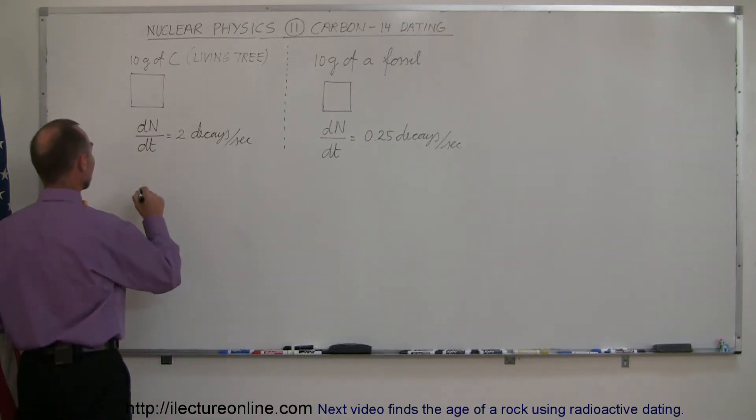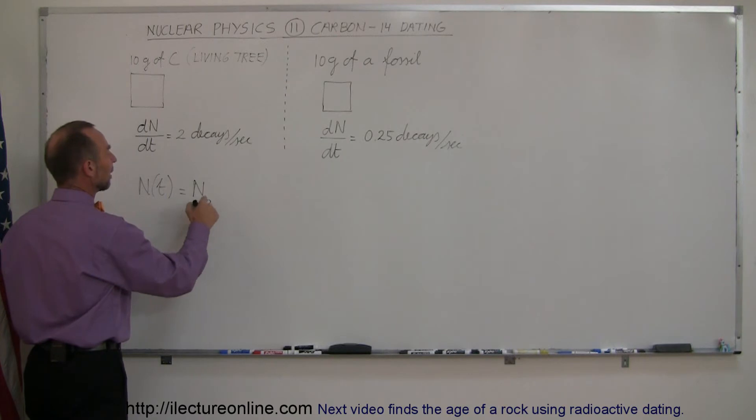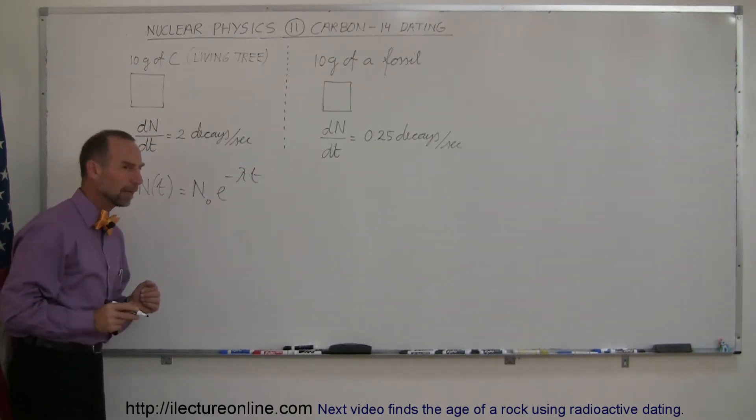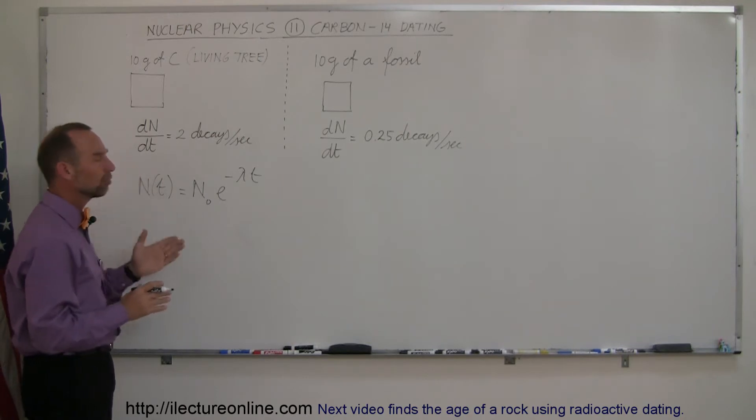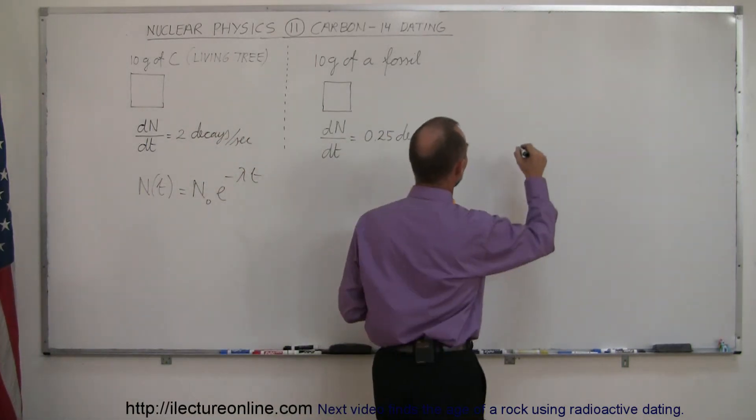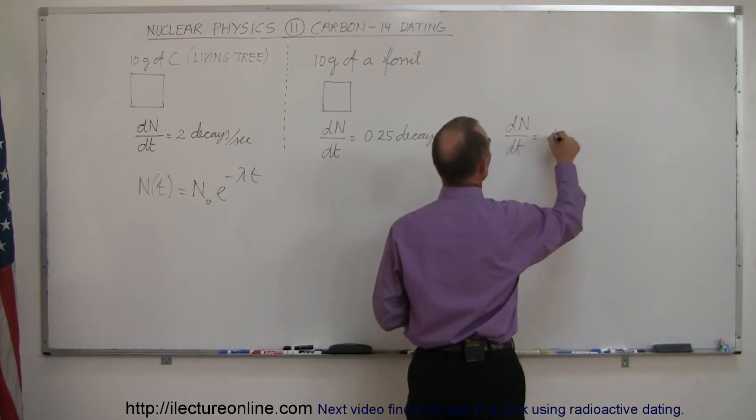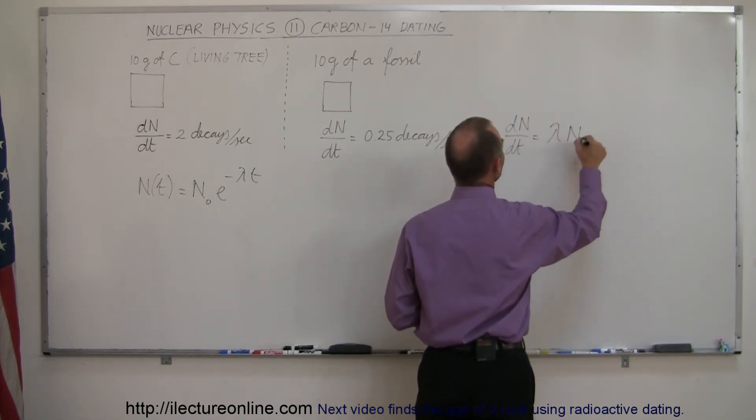Well, first of all, we realize that the amount of radioactive material that's left as a function of time is equal to the original that you started with, times e to the minus lambda times t. Now, since the decay rate is proportional to the number of radioactive nuclei in the sample, remember that dN/dt is equal to lambda times N.